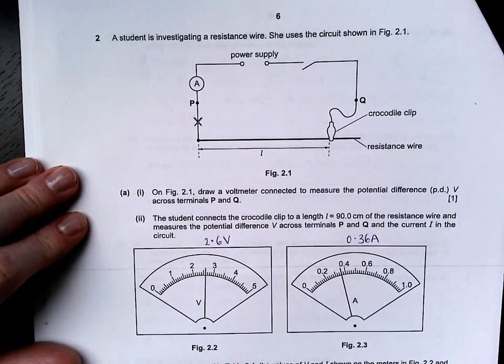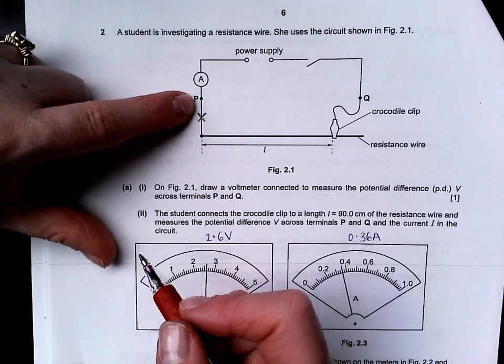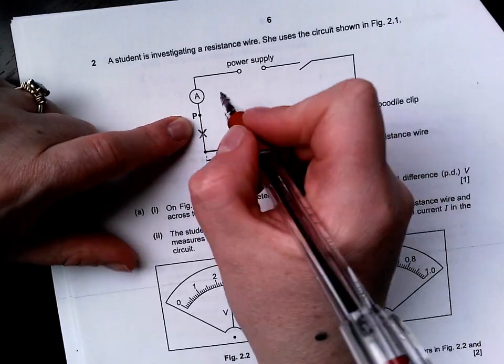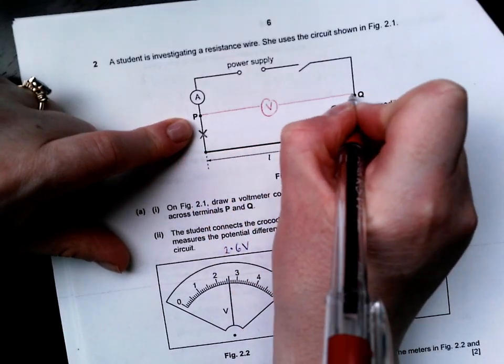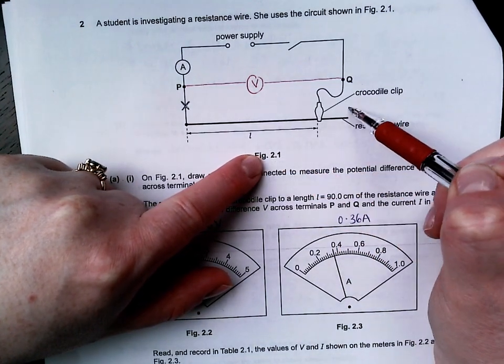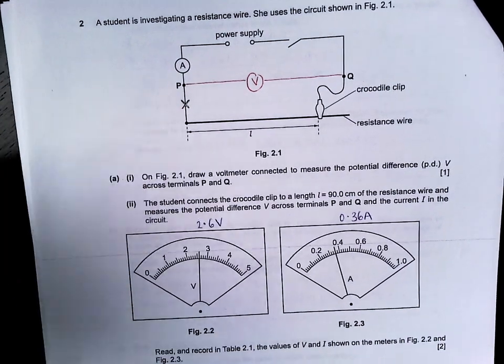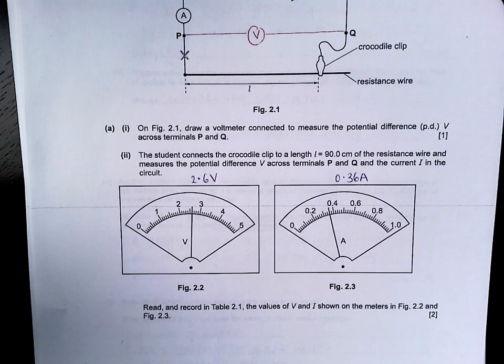On figure 2.1, draw a voltmeter connected to measure the potential difference across terminals P and Q. So we want to know what the potential, the voltage value is at P, what it is at Q, and we want to know the difference. We connect in parallel. So we are going to put our voltmeter here and connect across.